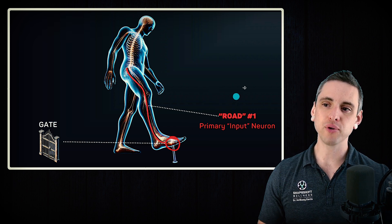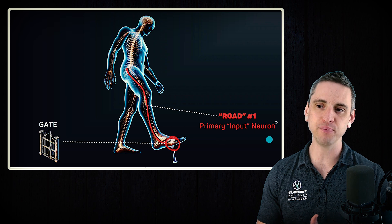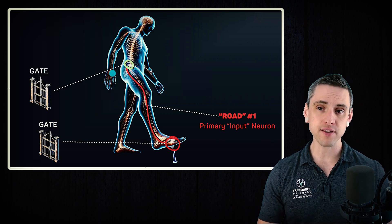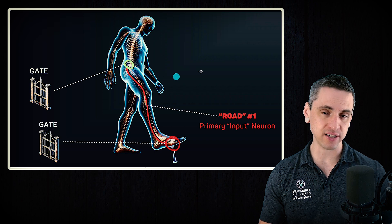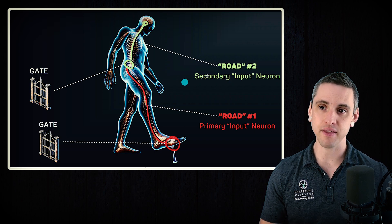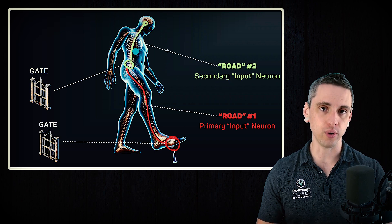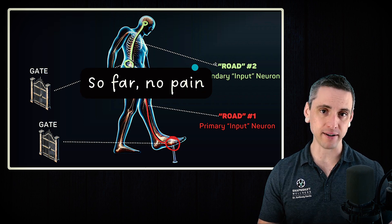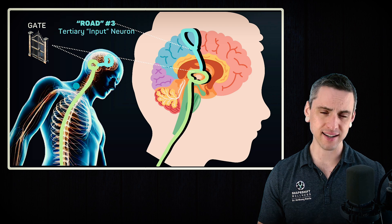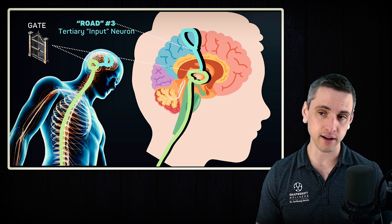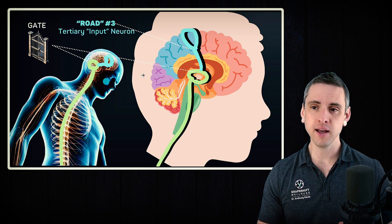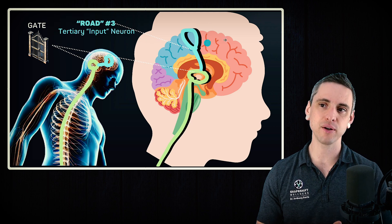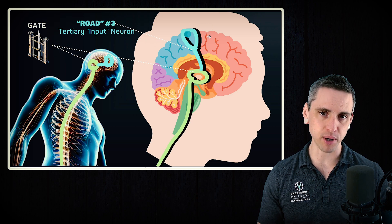Road number one is called your primary afferent neuron or primary input neuron — so far, we have no pain. Then we get to the spinal cord where we have another gate, a synapse. If we get through that gate, we get another road or neuron up to the brain — still no pain. Once we get to the thalamus in the brain, we have another gate. For simplicity, we have another gate and another road that goes up to the primary somatosensory cortex of the brain.